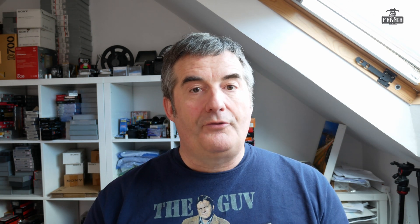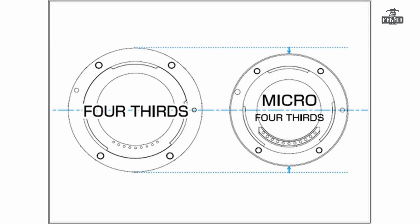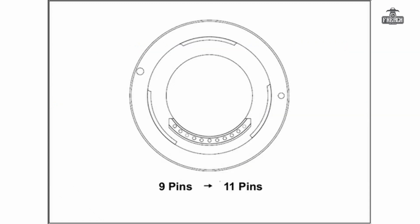In short, here is a list of differences between the two systems. The flange back distance — that is the distance between the sensor and the back of the objective — has been halved, going from 40 millimeters to only 20 millimeters. The diameter of the mount is reduced by 9 millimeters. The number of pins on the mount goes from 9 to 11.